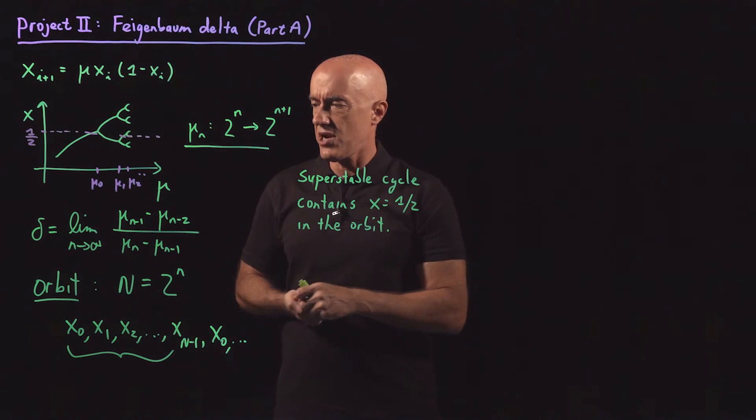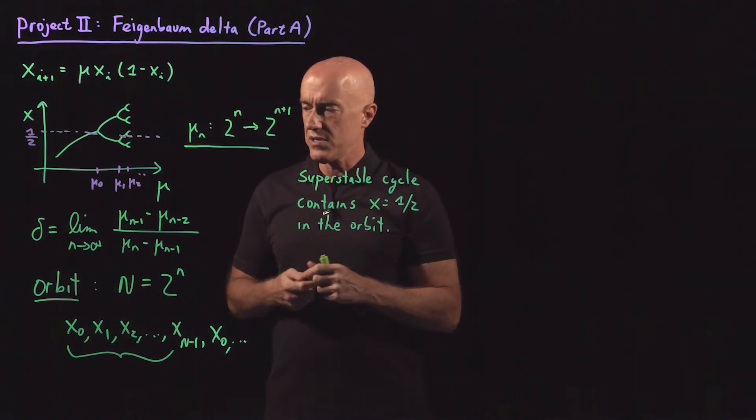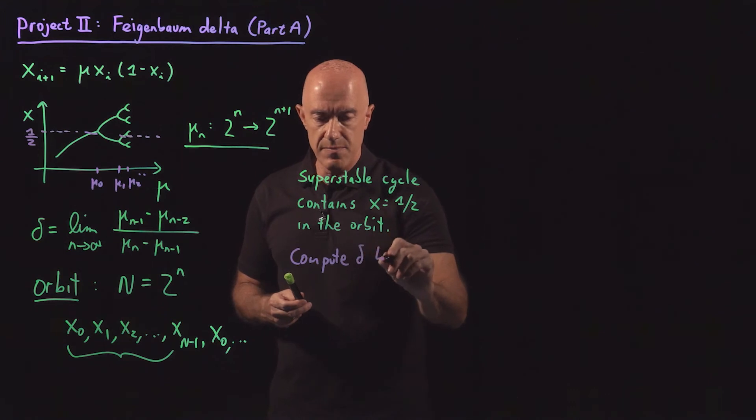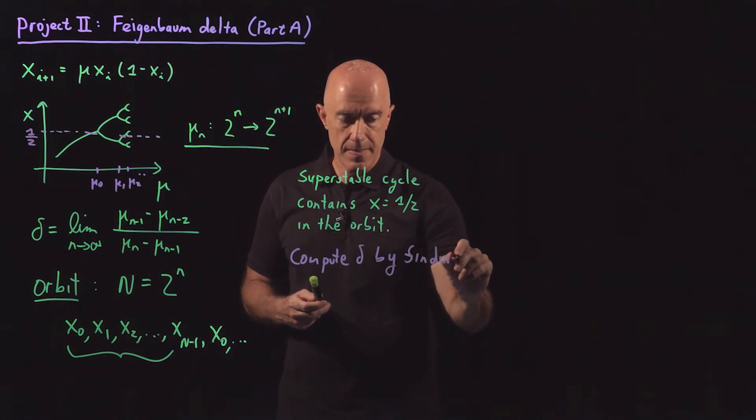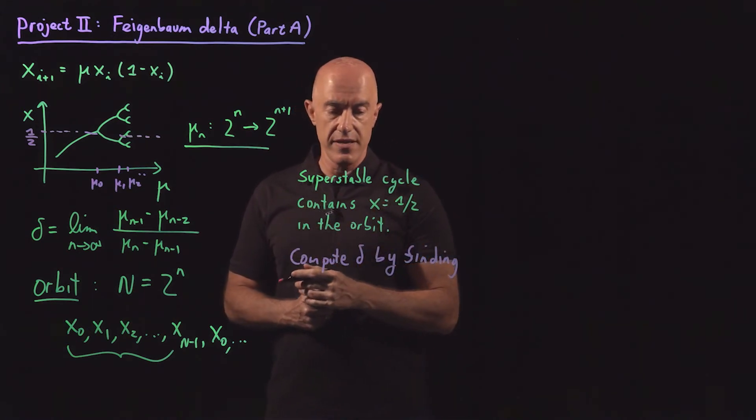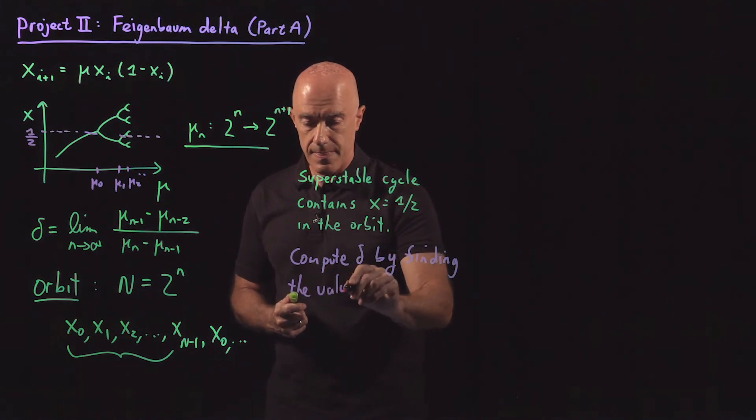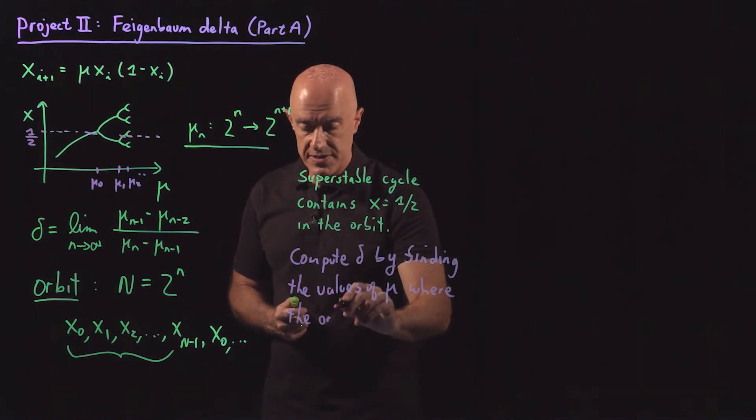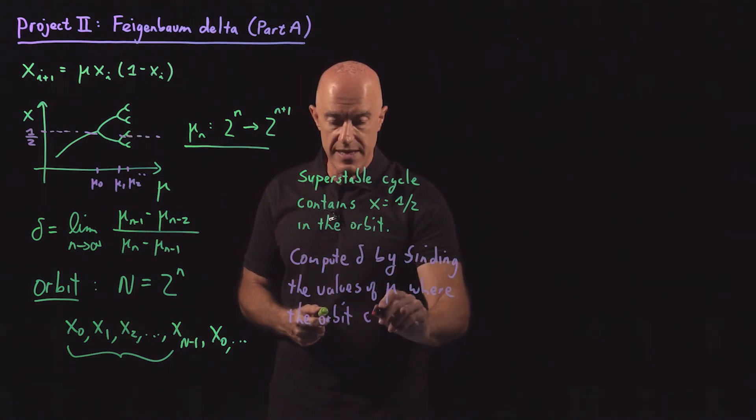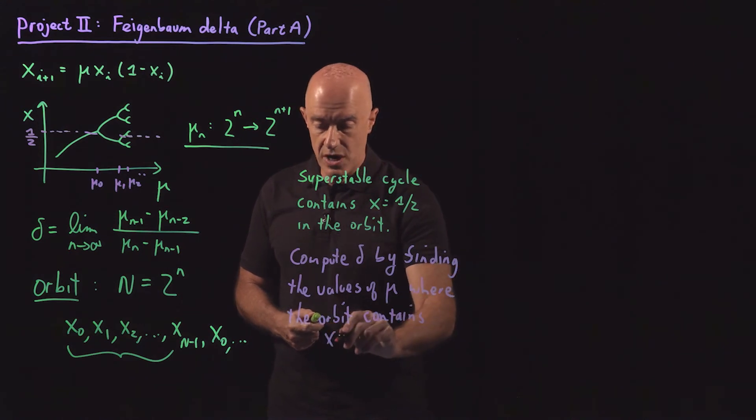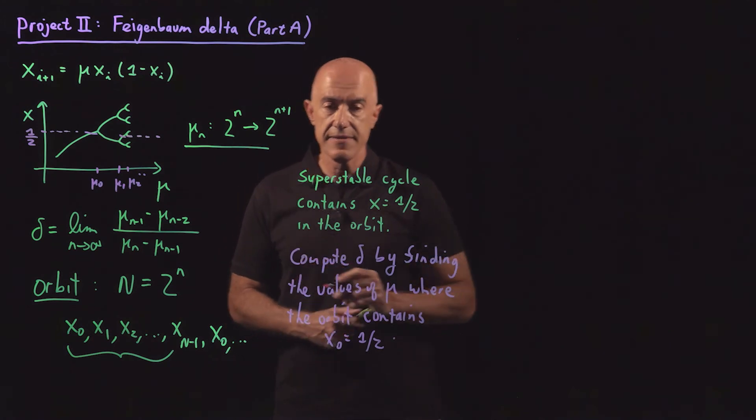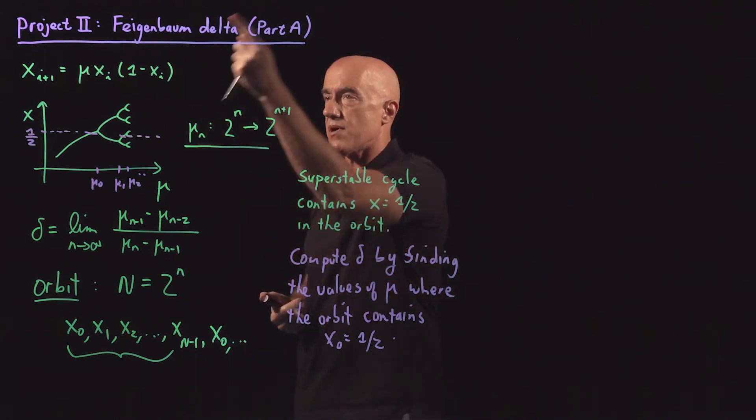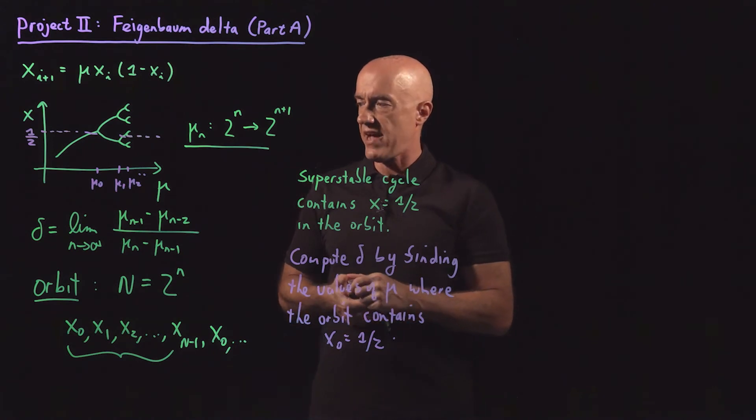So instead of computing delta at the bifurcation points, what we're going to do is we're going to compute delta by finding the super stable values, by finding the values of mu where the orbit contains the super stable point, where the orbit contains x naught equals one half. So we're just going to change the definition. It will go to exactly the same number, the Feigenbaum delta, but the computation will be much faster.